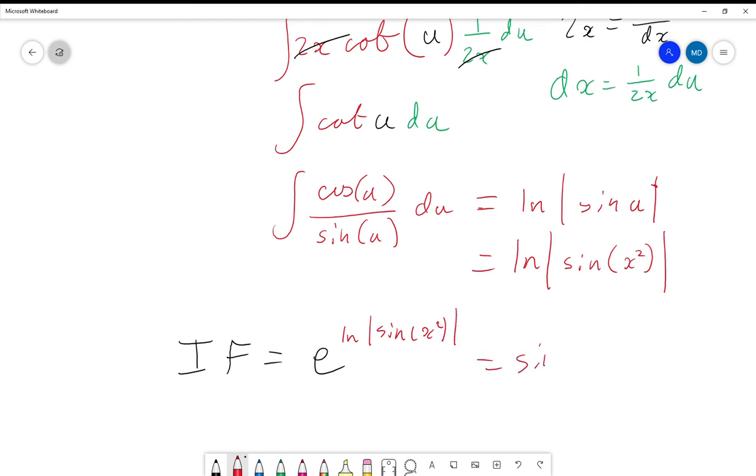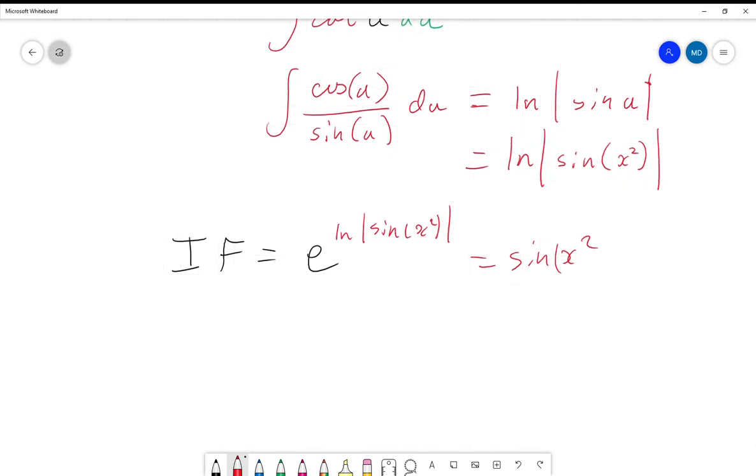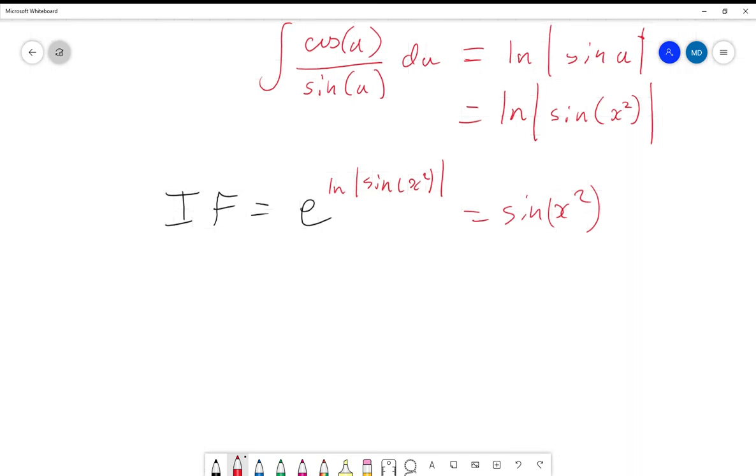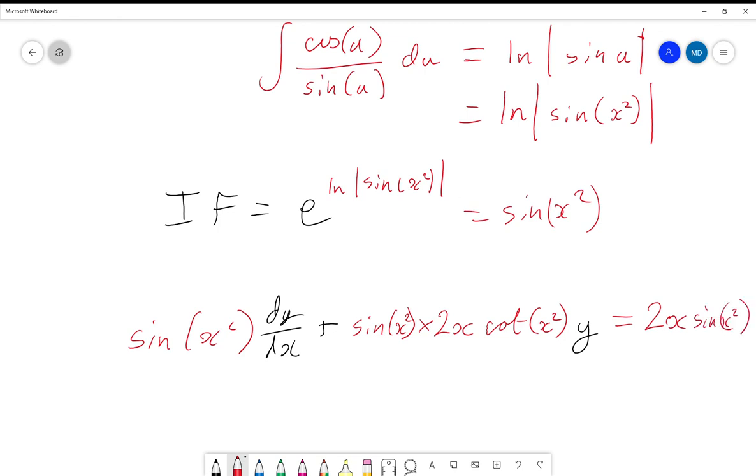And so we're going to apply that integrating factor and we get multiply both sides by integrating factor and we get sin(x²)dy/dx + sin(x²)y = 2x·sin(x²). Notice I've multiplied every single part of that by sin(x²).